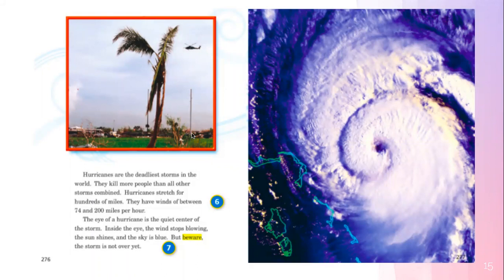Hurricanes are the deadliest storms in the world. They kill more people than all other storms combined. Hurricanes stretch for hundreds of miles. They have winds of between 74 and 200 miles per hour. The eye of a hurricane is the quiet center of the storm. Inside the eye, the wind stops blowing. The sun shines and the sky is blue. But beware, the storm is not over yet.